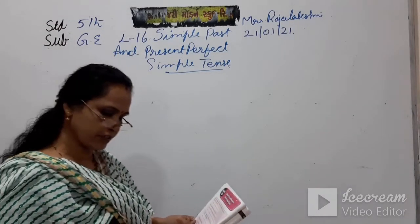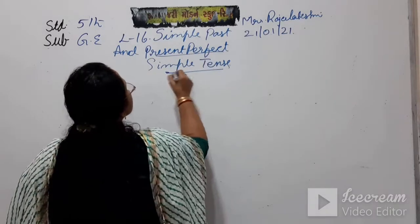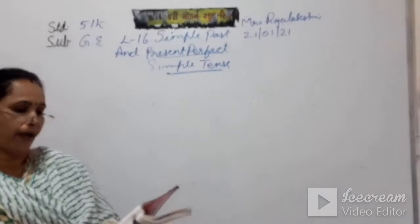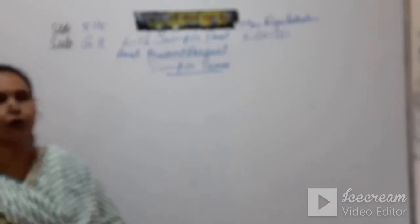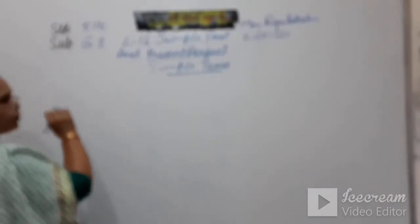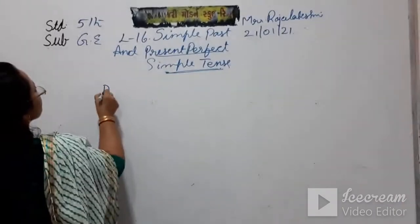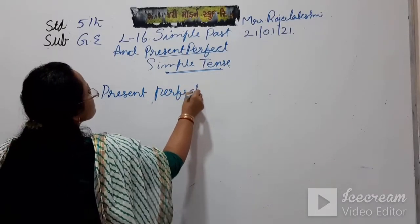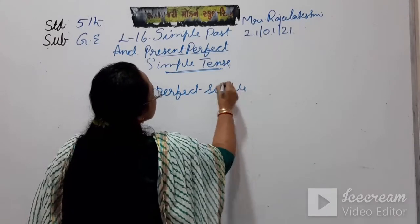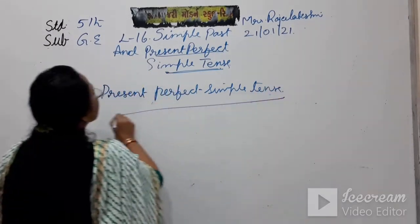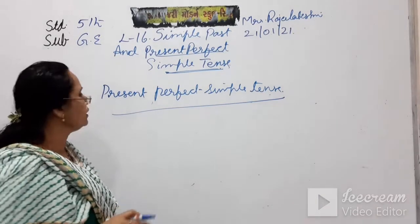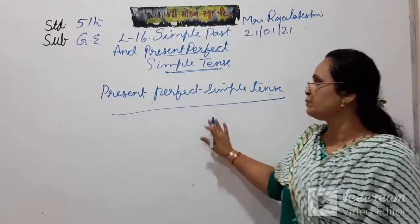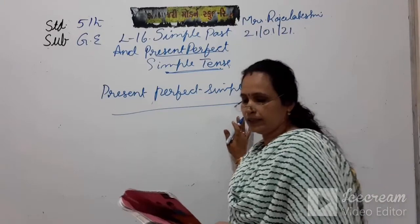We use the Present Perfect to talk about actions that started in the past and are still going on now. Jo ho gaya hai, woh abhi bhi continue hai — uske liye hum Present Perfect Simple use karte hain. Actions that started in the past and are still going on now.